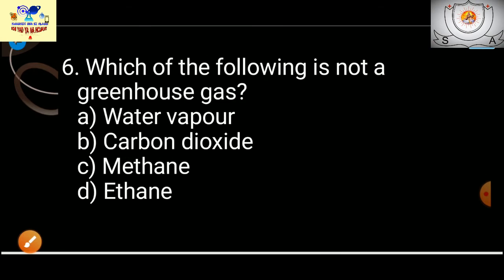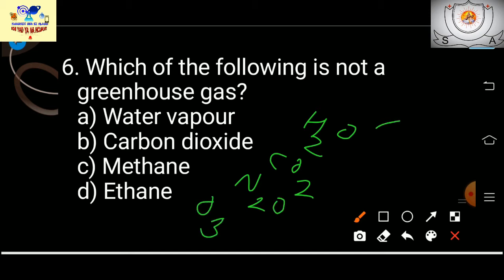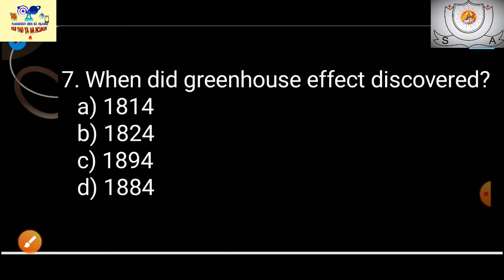Question 6: Which of the following is NOT a greenhouse gas? First, let me tell you which gases are greenhouse gases: H2O, carbon dioxide, N2O, ozone, and methane. So the one that is not a greenhouse gas — the answer is ethane.